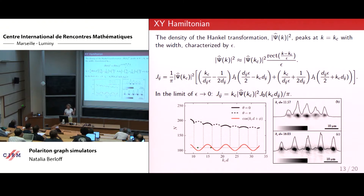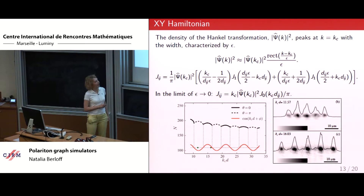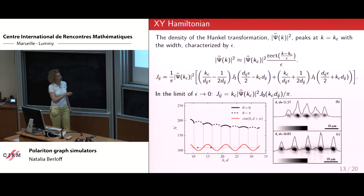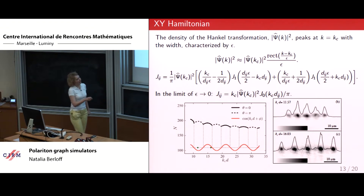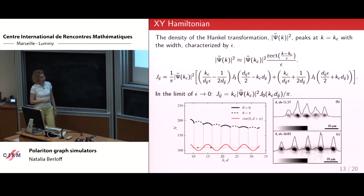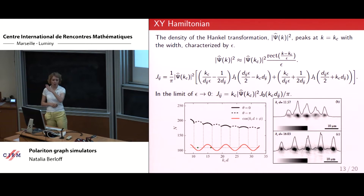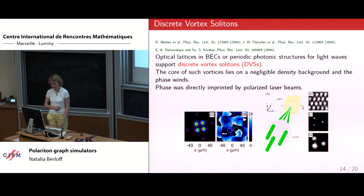Now we know how to control the sign of the coupling between spots. The first experimental data on the chain: we realized an Ising chain of condensates where k_c × d = 1.157, which is in the antiferromagnetic region. Indeed there is a minimum between spots and the phase difference is pi — you have zero-pi-zero-pi alternating, like an Ising spin. If we take the distance from the next band where ferromagnetic coupling is expected, a maximum appears between spots, corresponding to all-zero phase difference along the chain.